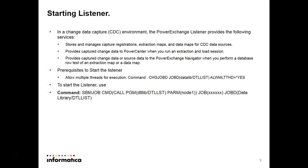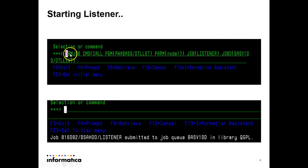To start the listener, we have to allow multiple threads for execution — this is a prerequisite. For that we have the command 'change job' and the command is given here. We can run the command to start the listener; the start listener command is given like this. We give the command in the command prompt and we'll get a message that the listener has been started.